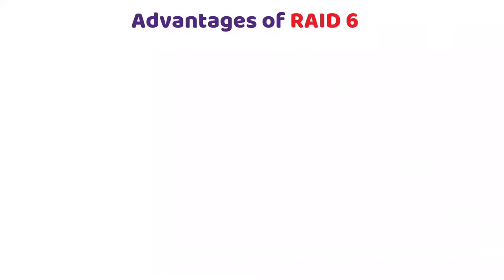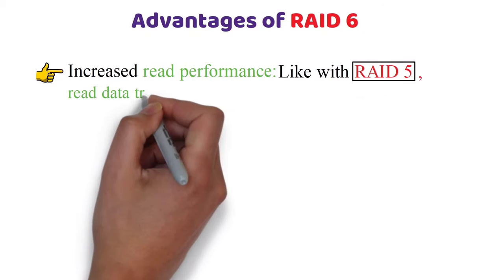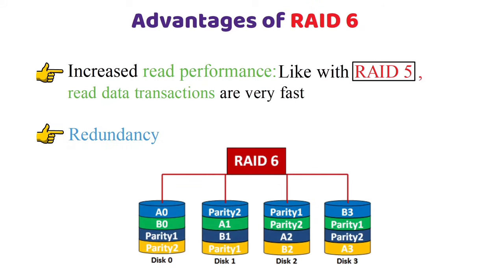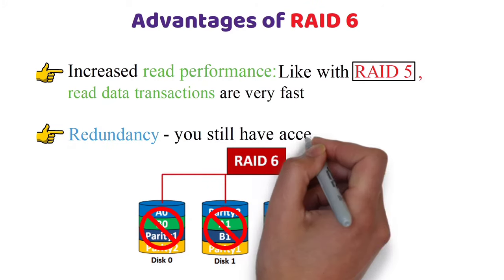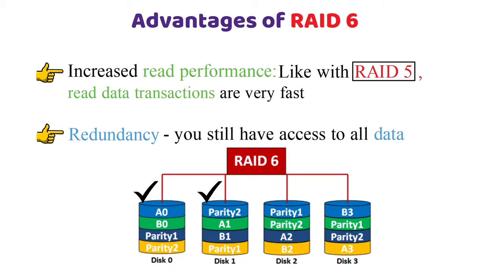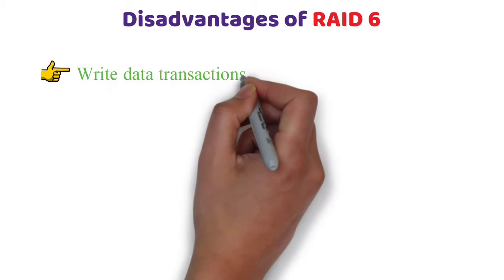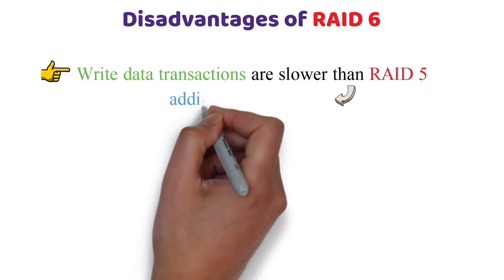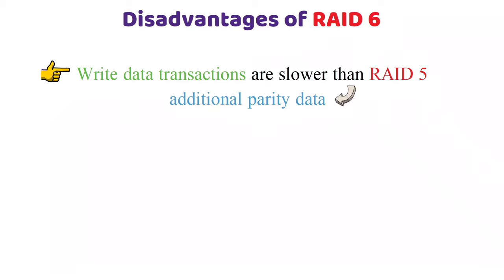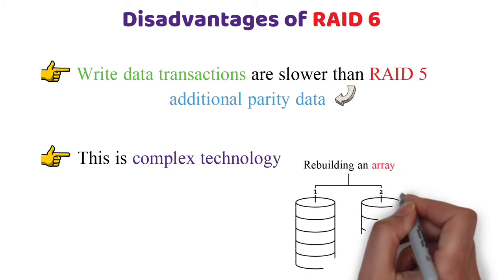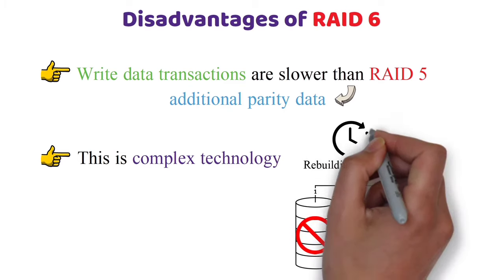Advantages of RAID 6: Increased read performance — like RAID 5, read data transactions are very fast. Redundancy: if two drives fail, you still have access to all data even while the failed drives are being replaced. Disadvantages of RAID 6: Write transactions are slower than RAID 5 due to the additional parity data that has to be calculated. This is complex technology, and rebuilding an array in which one drive failed can take a long time.